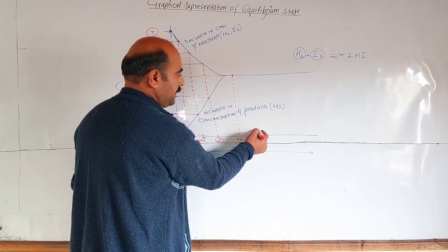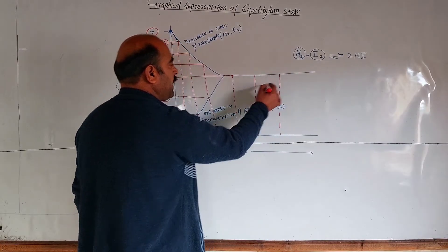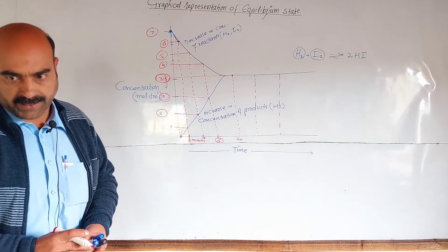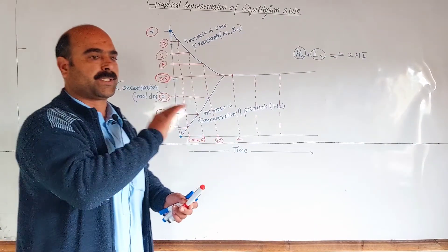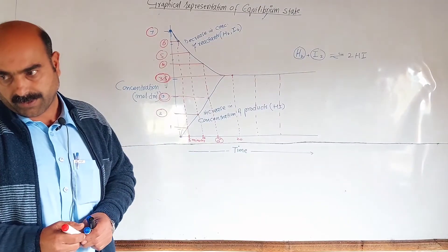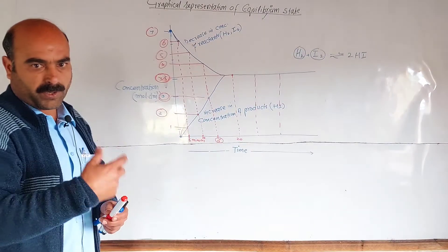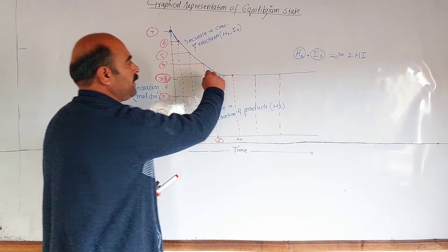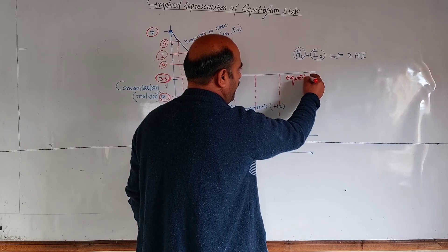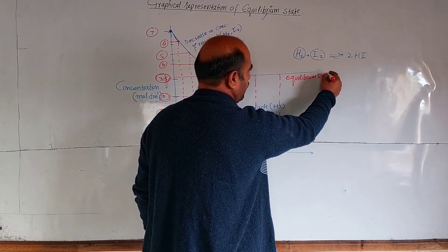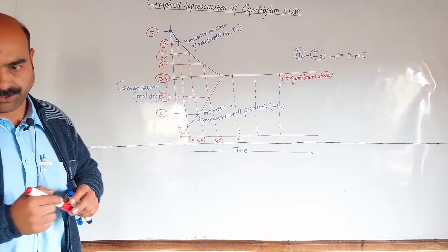Beyond a certain point, there is no further decrease in the concentration of reactants and no further increase in the concentration of products. The equilibrium state is reached. On the graph, the reactants show a downward line and the products show an upward line, both eventually becoming straight horizontal lines at equilibrium.